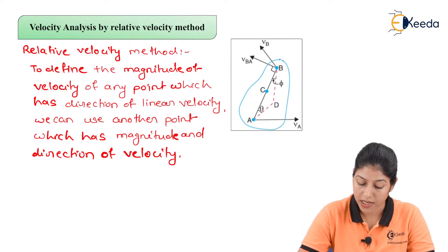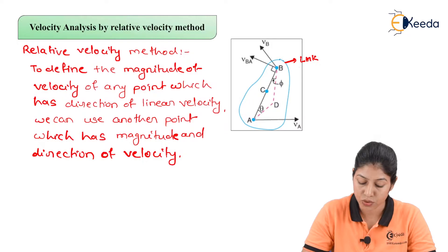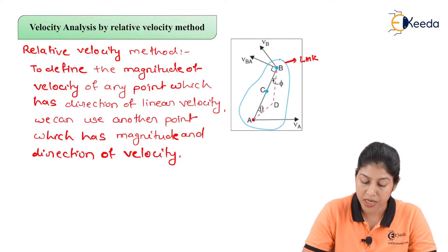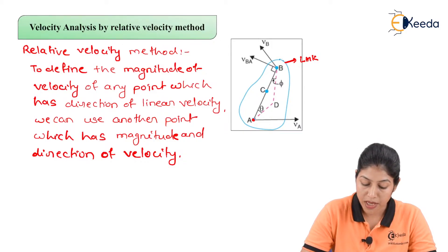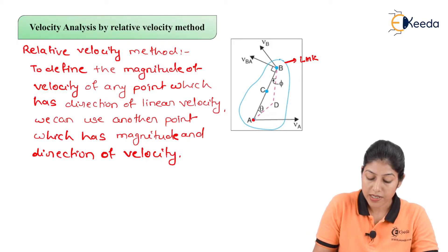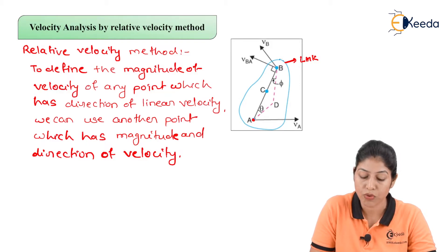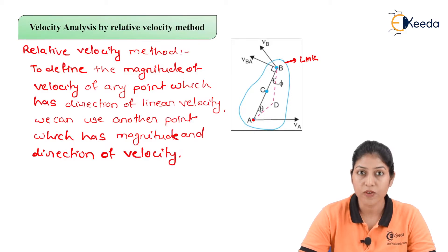We are considering one link — this arbitrary shape represents the link — and on this link I am taking two points A and B. Point A is in motion with velocity V_A and point B is in motion with velocity V_B. Now, V_A has both magnitude and direction, but at point B we have only the direction and not the magnitude. So we need to define the magnitude of velocity V_B using the relative velocity method, and for that we will draw a velocity diagram.